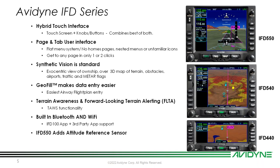We utilize a page and tab user interface — essentially a flat menu system. There are no home pages, no nested menus, no unfamiliar icons. Every page has a name spelled right out on the IFD. The cool thing about this flatter menu system is you can get to any page in one or two clicks, and in many cases you're still keeping your map up on screen so you're not losing situational awareness.